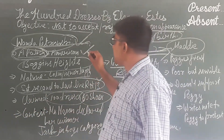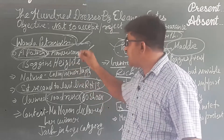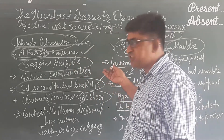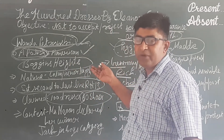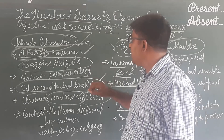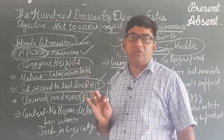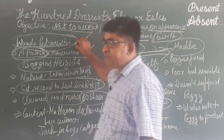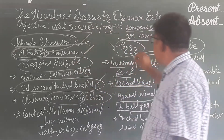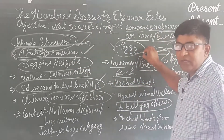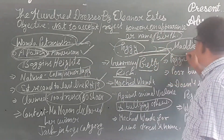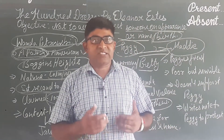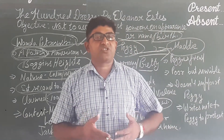This story revolves around three girls: Wanda Petronsky, Peggy, and Maddy. All three girls were studying in the same class in a school. I have circled all the important words mentioned on the board.